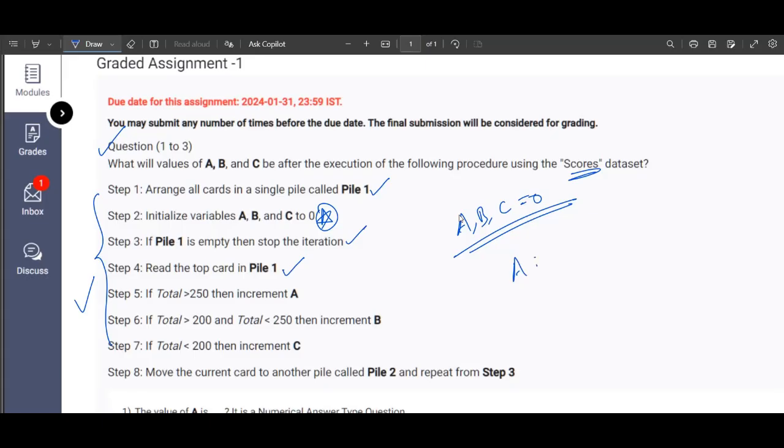Now coming to the point of updating A, B, and C. When does A get incremented by one? A gets incremented by one if the total score is greater than 250. In that case A becomes A plus 1.